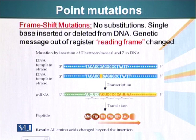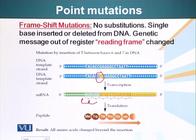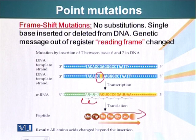In the example here, there is an insertion of T between bases 6 and 7. Since the reading frame is three nucleotides at a time, when we add an additional nucleotide the whole sense of the message is altered, and all the amino acids subsequently added during protein synthesis will be different from the ones which were supposed to be in the wild-type or normal protein. So, these are the frameshift mutations.